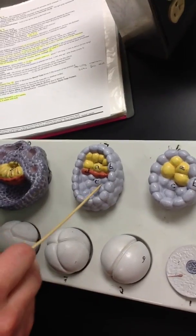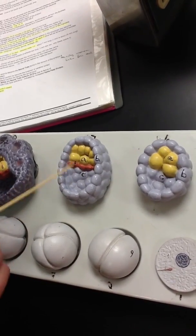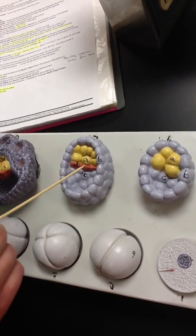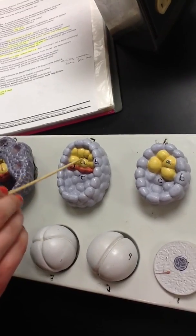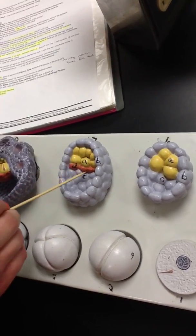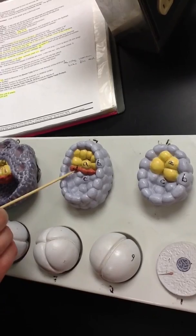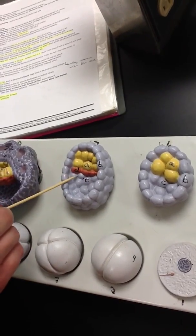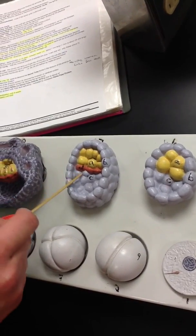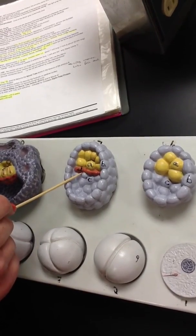Then we have the bilaminar blastula, which is at day 7. The inner cell mass differentiates into two layers. We have the epiblast, which is this yellow layer, and the hypoblast, which is this red. This hypoblast will give rise to the yolk sac when its cells line the blastocoel.